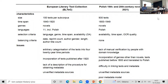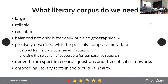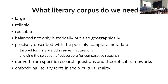What literary corpus do we need? We need a large one to make research possible and reliable. We have to understand how it was built — the methodology behind it. It has to be reusable, so we should be able to ask different sets of questions of the same corpus of texts. It should be balanced not only historically but also geographically, which is particularly interesting in the context of central and eastern European countries with their history. It should be precisely described with complete metadata and should address specific research questions and social-cultural reality.